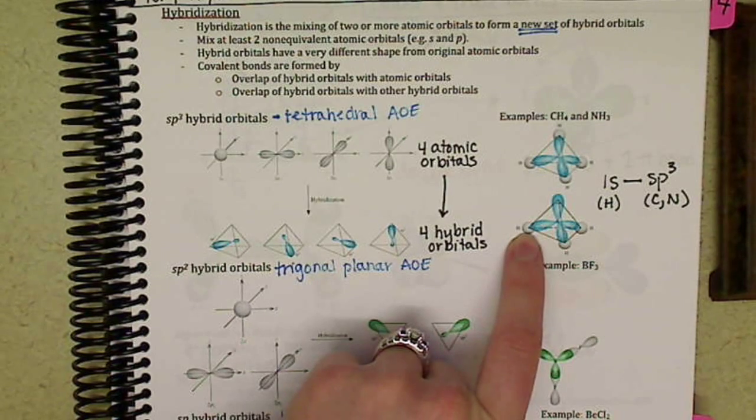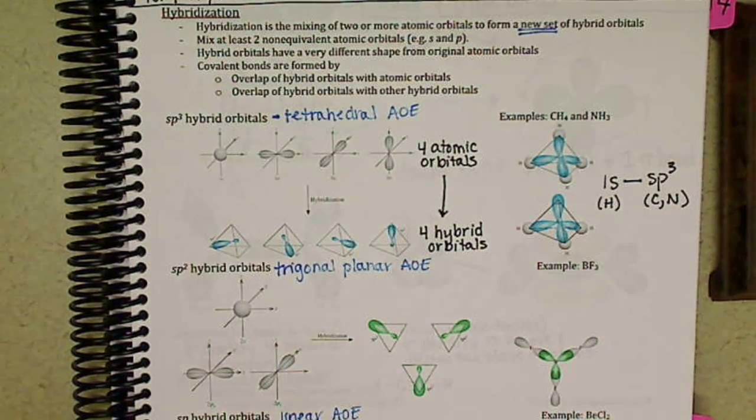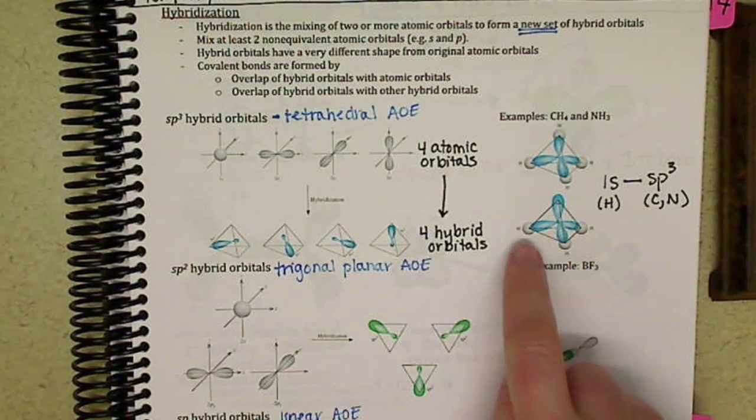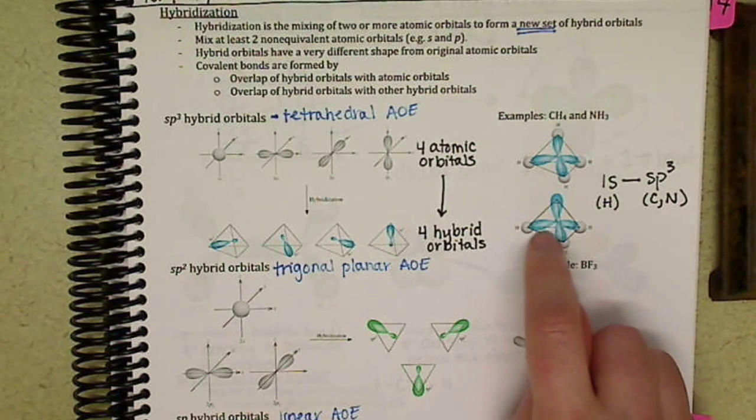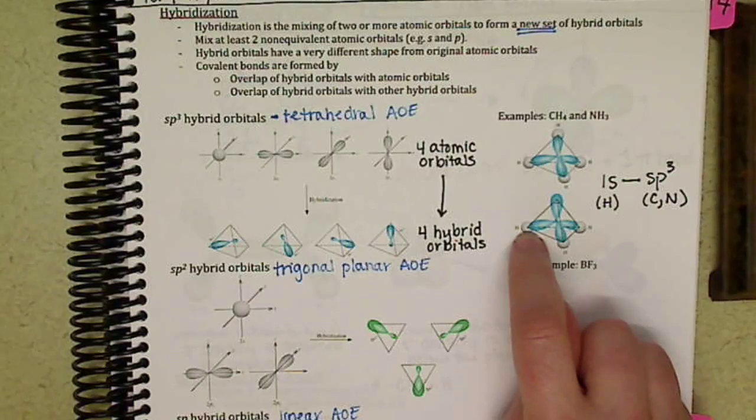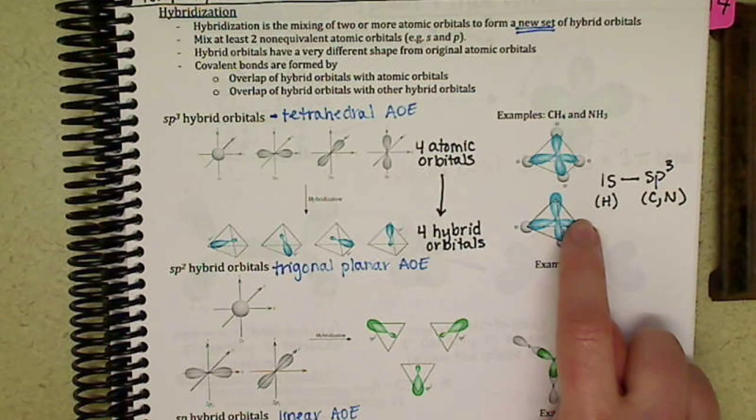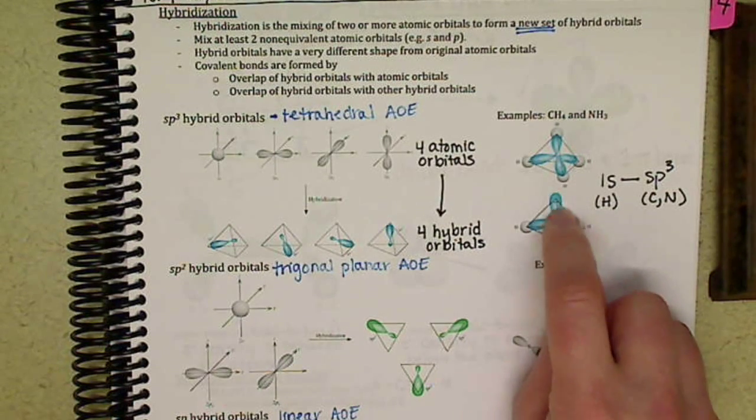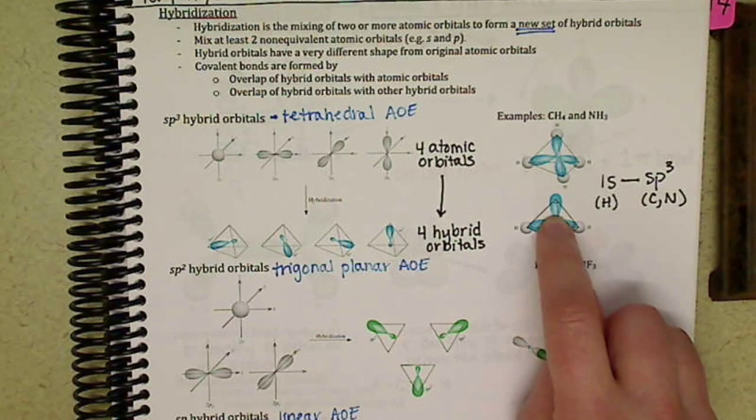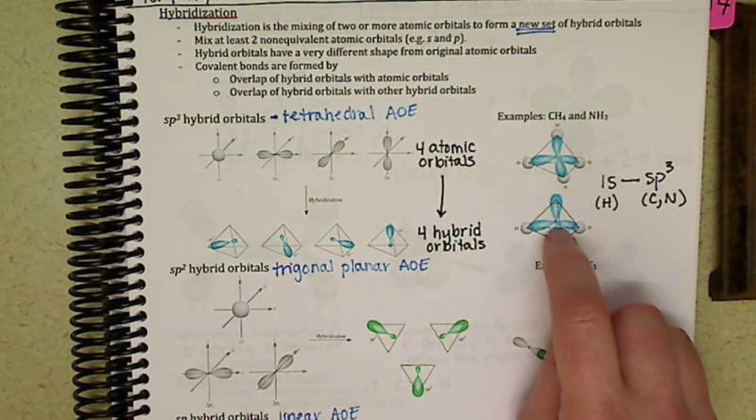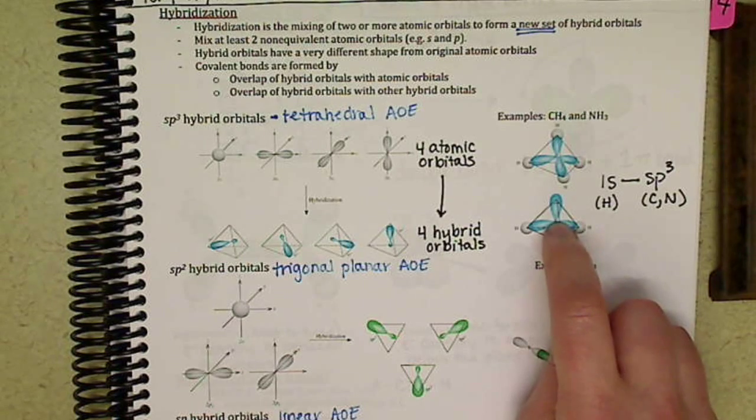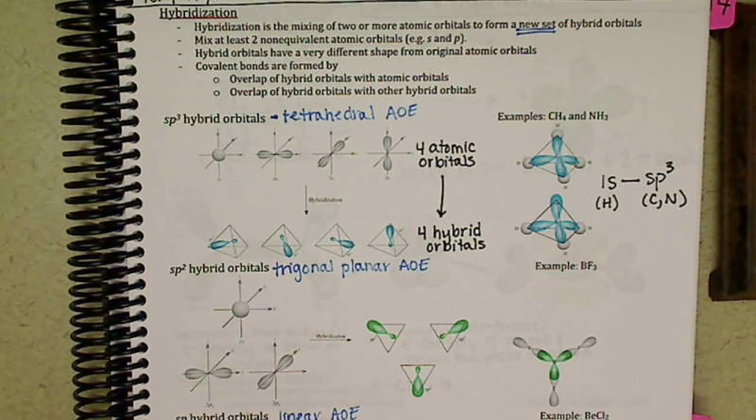Hydrogen comes in with its S orbital. Hydrogen cannot hybridize, because it doesn't have any other shapes to hybridize with. So the hydrogen comes in and overlaps one lobe of the hybrid orbital with its S orbital. Another hydrogen comes in on a different hybrid orbital, the third on a third hybrid orbital, and then the fourth remaining hybrid orbital is where the lone pair of electrons on nitrogen goes, and that allows for those lone pairs of electrons to be in the proper place, which was essentially above the nitrogen with the hydrogens below the nitrogen.